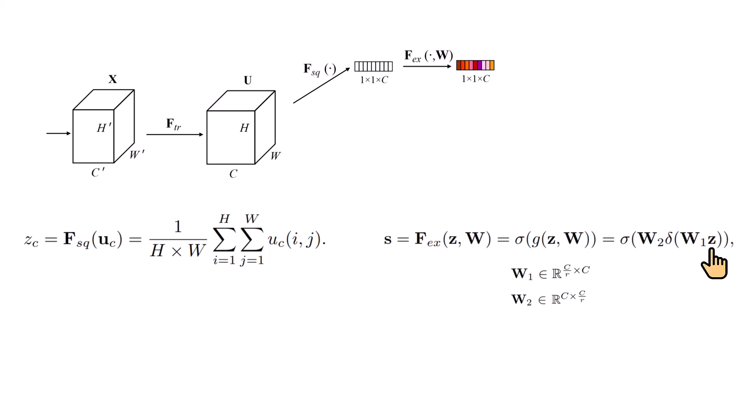They just take the z vector, which is what we have as our input, then multiply it by w1, which is just like a fully connected layer that maps the number of channels from C to C over r. And next, it passes the output through a nonlinear activation function, which they used ReLU in the paper. And then they passed it through another fully connected layer, which maps from C over r to C. And finally, they pass the output value to sigmoid to produce the final output.